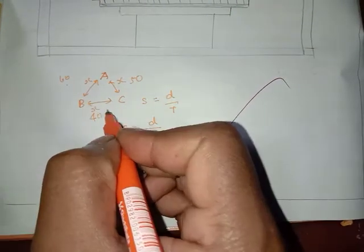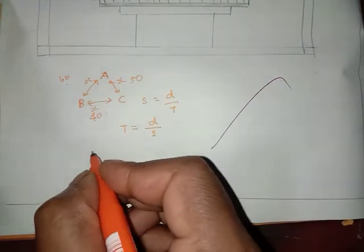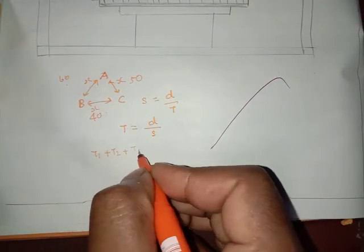Now, we have to find total distance by total time. So, total time, t1 plus t2 plus t3 equals total time.